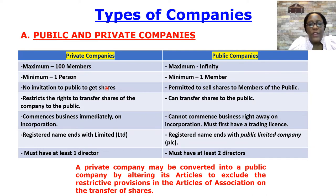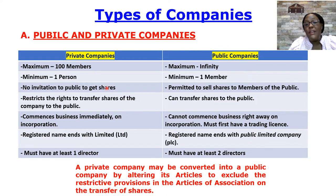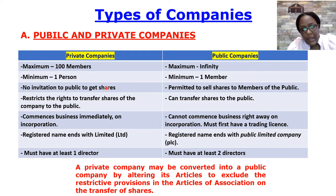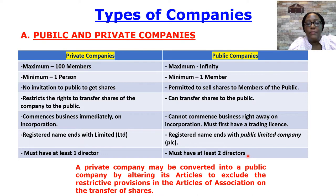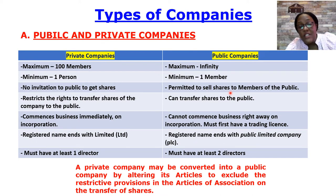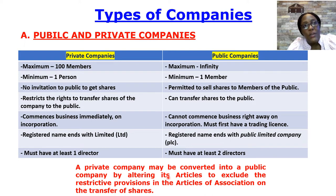Public companies, on the other hand, are for example those listed on the stock exchange — Umeme, MTN Uganda, Clays. These companies can have a maximum of an unlimited number of members and a minimum of seven persons. Public companies can sell shares to the public — that's why you hear about the MTN IPO, calling for people to buy shares. When they are established they cannot run business immediately; they must first have a trading license. Public companies have the word 'PLC' at the end of their name and must have a minimum of two directors.